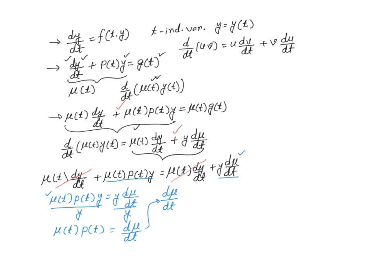So we have dμ/dt = μ(t)·p(t). I can rewrite this as dμ/μ = p(t)·dt. At this point, I can integrate both sides — the left-hand side with respect to μ and the right-hand side with respect to t — giving us ln(μ) = ∫p(t)dt.